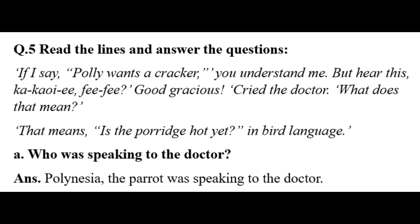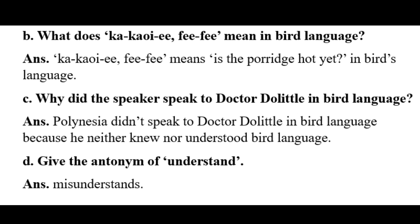Question five: Read the lines and answer. (a) Who was speaking to the doctor? Polynesia, a parrot, was speaking to the doctor. (b) What does 'ka kaoi e fee fee' mean in bird language? It means 'the porridge is hot yet' in bird language. (c) Why did the speaker not speak to Dr. Dolittle in bird language? Because he neither knew nor understood bird language. (d) Give the antonym of 'understand': misunderstand.